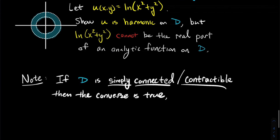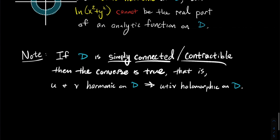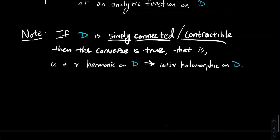A little note: what if your domain is simply connected, or contractible? For our intents and purposes, think: what if your domain doesn't have a big hole in it like the annulus does? Then the converse is true. If the real and imaginary parts of a complex function are harmonic, then you can conclude the function itself is holomorphic on D. So in that case it's an if and only if: harmonic real and imaginary parts if and only if, when you put them together as U + iV, you get a holomorphic function.